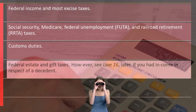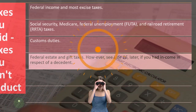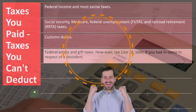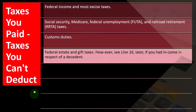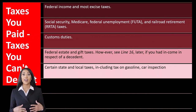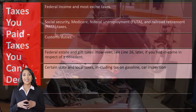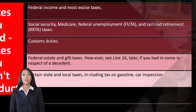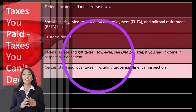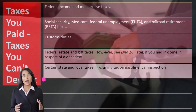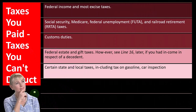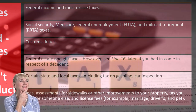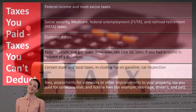You also can't deduct customs and duties, federal estate and gift taxes — the death taxes, a different kind of federal tax. If you died and you're over a certain threshold, the IRS comes in, and you can't deduct that either. However, see line 16 later for income in respect of a decedent. Certain state and local taxes, including taxes on gasoline and car inspections, are generally not deductible — those are tied to usage of public goods like roads. You can't deduct fees and assessments for sidewalks or other improvements to your property, taxes paid for someone else, or license fees such as marriage, driver's, and pet licenses. Foreign personal and real property taxes are also not deductible.